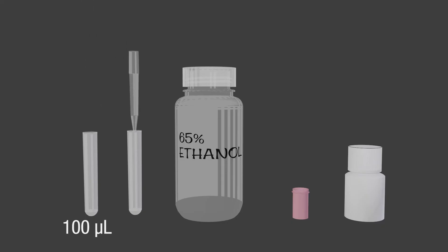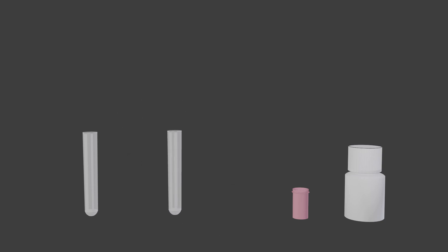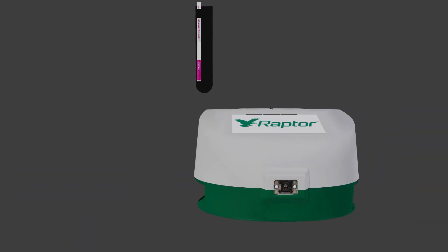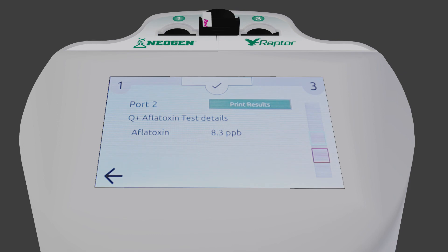Add 100 microliters of sample filtrate to a sample collection tube. Add 100 microliters of 65% ethanol and mix well. Transfer 100 microliters of the sample dilution to a red dilution cup. Add 500 microliters of sample diluent and mix well. Place Raptor cartridge into port. Add 400 microliters of sample to cartridge. Result will be displayed. Remember to multiply your result by the dilution factor. For this example, multiply by two.